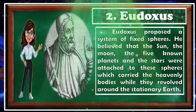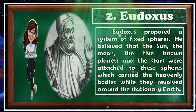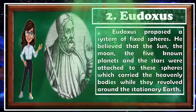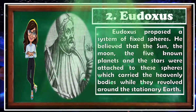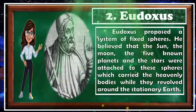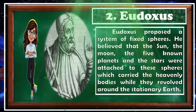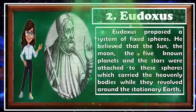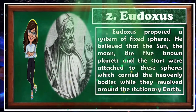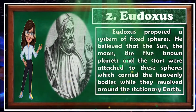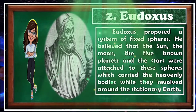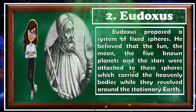Second is Eudoxus. He proposed a system of fixed spheres. He believed that the sun, the moon, the five known planets, and the stars were attached to these spheres, which carried the heavenly bodies while they revolved around the stationary Earth.